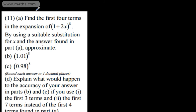In the last few videos, we've been looking at the binomial expansion for positive integer powers. We're going to continue that work and look at approximations where we have a positive integer power. In question 11, part A says find the first four terms in the expansion of (1 + 2x) to the power of 8.